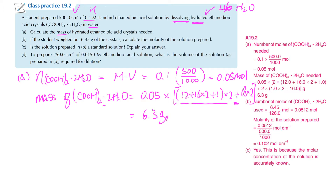So you use 6.3 grams of crystals to prepare the solution, which will give roughly 0.1M. However, not every time will you get exactly 6.3 grams. So if the student weighs out 6.45 grams - a little bit more than 6.3 - we need to calculate the new molarity of the solution prepared.